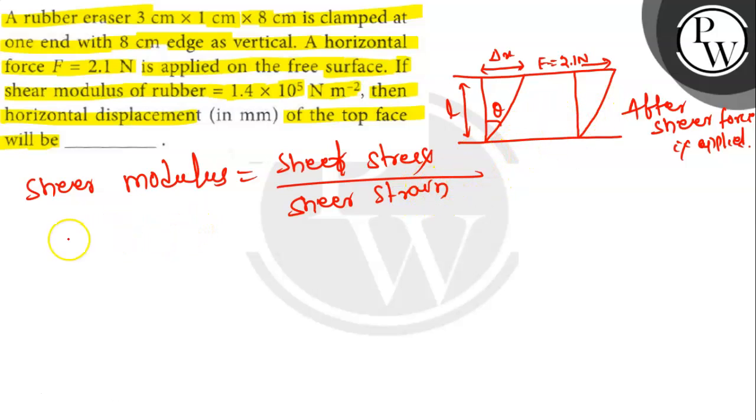So shear stress is equal to 2.1 divided by 0.03 × 0.01, which is equal to 7000 N per meter square.